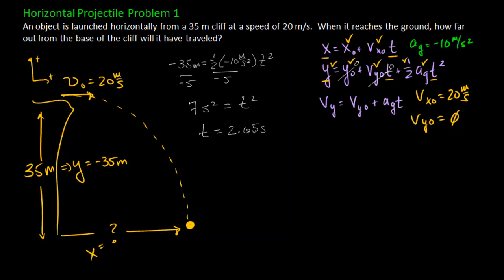Now, luckily, this object's been falling for 2.65 seconds. It's also moving sideways for 2.65 seconds. So I've now solved for time. If I go back to my x equation, one of the unknowns is now known. I know what t is. So I can therefore use my x equation now. My first step was using the y equation. My second step is going to be to use the x equation.